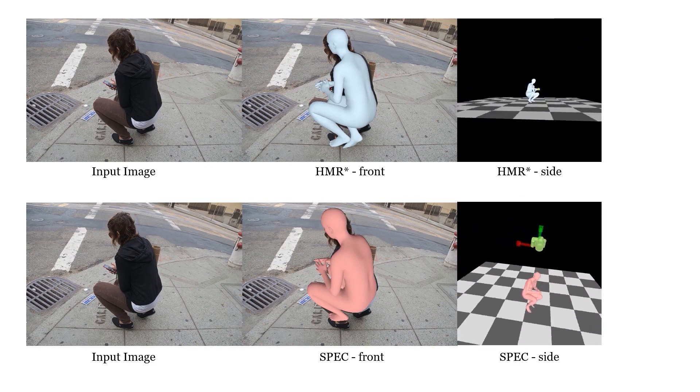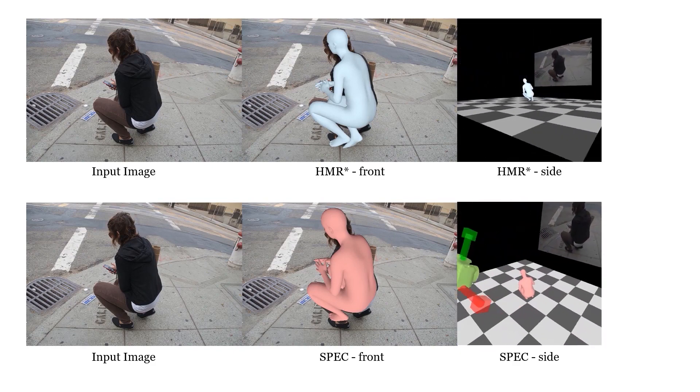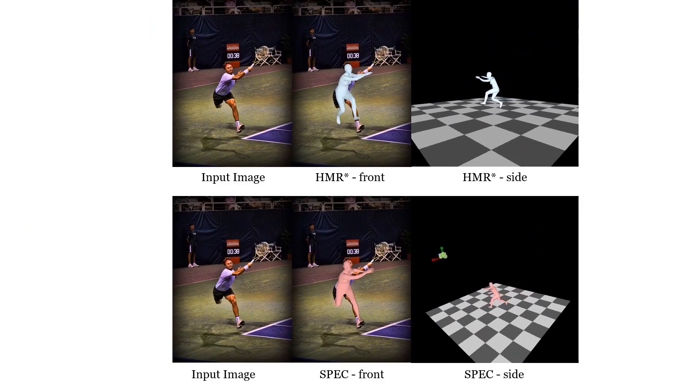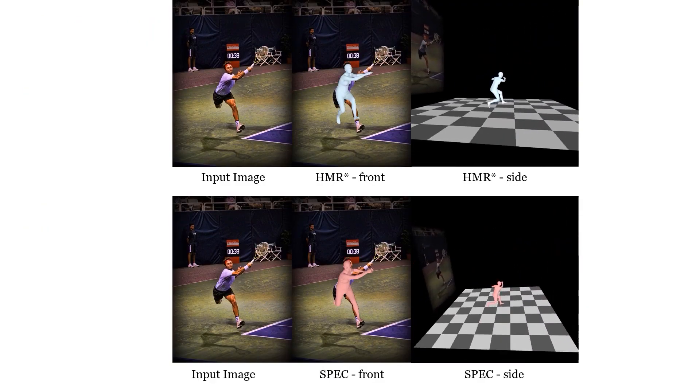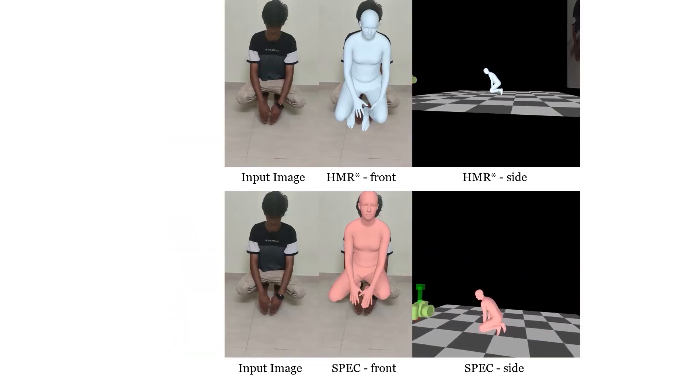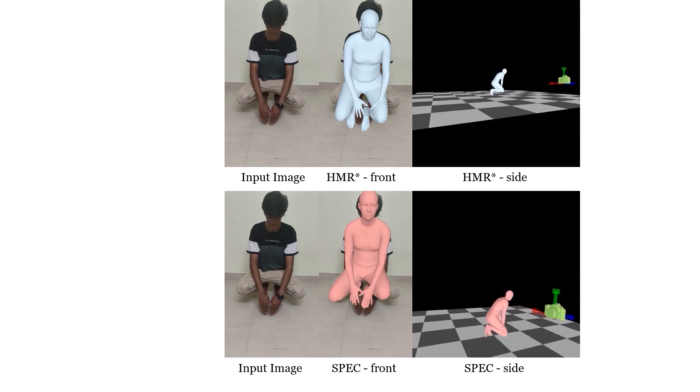Due to the unrealistic focal length assumption, previous work fails in the case of foreshortening, which is common in photos of people. Because SPEC uses a more realistic focal length approximation, it better models foreshortening and thus better reconstructs pose.